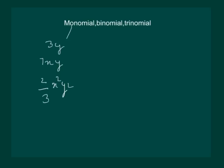An algebraic expression having two terms is called a binomial. Consider the example 2x - 3. This algebraic expression has two terms, namely 2x and -3, hence it is a binomial. Another example of a binomial can be xyz - 5. This algebraic expression also has two terms: xyz is one term and -5 is another term, so it is a binomial.